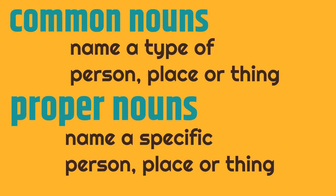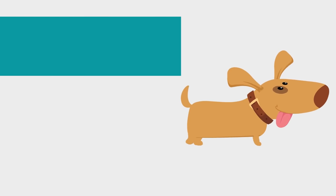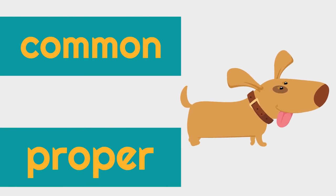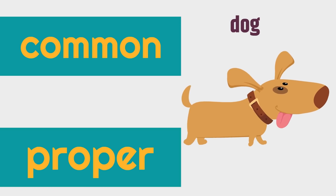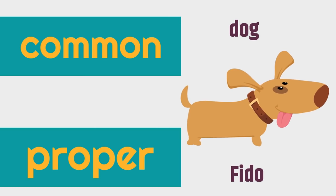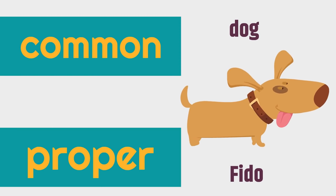Now let's show you with some examples. Here's our first example. What's the common noun for this? Dog. Dog is the common noun. Now let's say this dog's name is Fido. Fido is the proper noun for this dog because that's the specific name of this dog. Dog is the type of thing that this is, so it's the common noun. The common noun is dog. The proper noun is Fido.